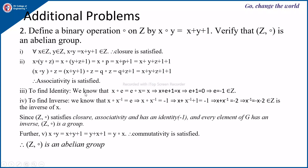To find the identity: x∘E = x expands to x + E + 1 = x, so E = -1, which is an integer. To find the inverse: x∘x⁻¹ = E = -1 gives x + x⁻¹ + 1 = -1, so x + x⁻¹ = -2, therefore x⁻¹ = -x - 2, which is also an integer and is the inverse of x.